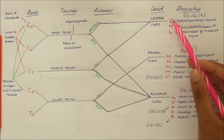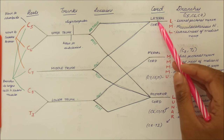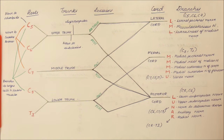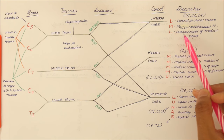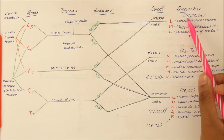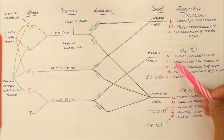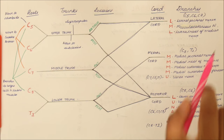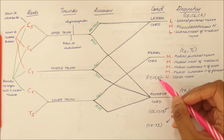Now let's look at the root values of these nerves. The nerves from the lateral chord — the lateral pectoral nerve, musculocutaneous nerve, and lateral root of median nerve — have the root values C5, C6, C7. The nerves from the medial chord have the root values C8 and T1, except for the ulnar nerve, which has a root value of C7, C8, T1.